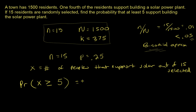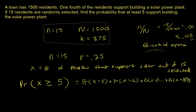Greater than or equal to five means we'd start calculating P(X=5) + P(X=6) + ... + P(X=15), which would take a long time. The easier approach is to use the binomial table, which gives cumulative (less than or equal to) probabilities. So we flip this around: P(X≥5) = 1 − P(X<5).